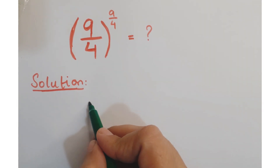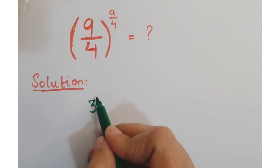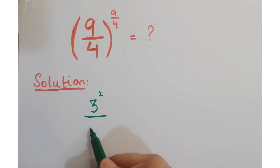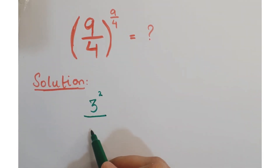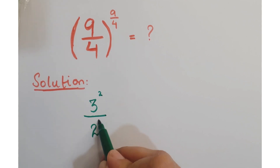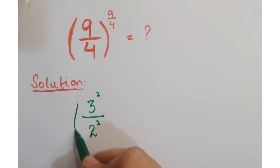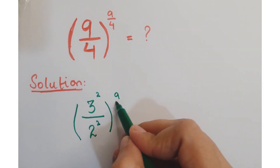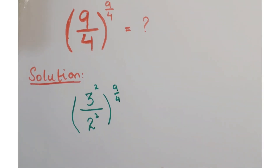Now 9 is a perfect square of 3, so you can write it as 3 squared, and 4 is a perfect square of 2, so you can write it as 2 squared, whole to the power 9 upon 4.